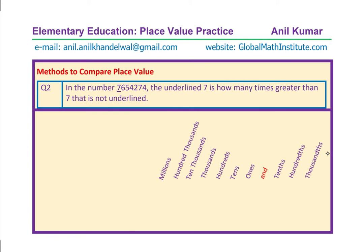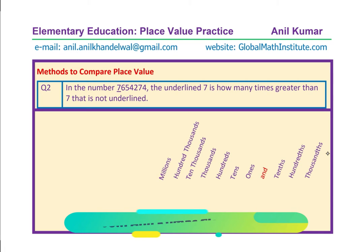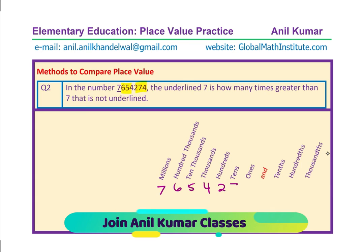Now let us look at question number 2. I'd like you to pause the video, apply these strategies, and write down your answer. The question is: in the number 7,654,274, the underlined 7 is how many times greater than the 7 that is not underlined? Write down the number with periods of 3: 7,654,274. We are comparing the 7 in the millions place to the other 7, which is in the tens place.